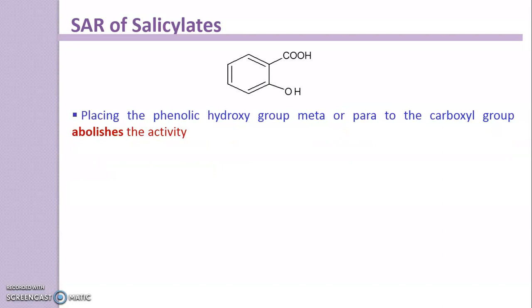Placing the phenolic hydroxy group meta or para to the carboxyl group abolishes the activity. In salicylic acid, the hydroxy group is at the ortho position relative to the COOH group, but if you change the position to meta or para, it produces an inactive compound — it does not show any activity.